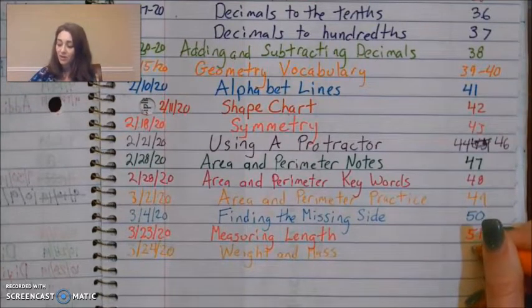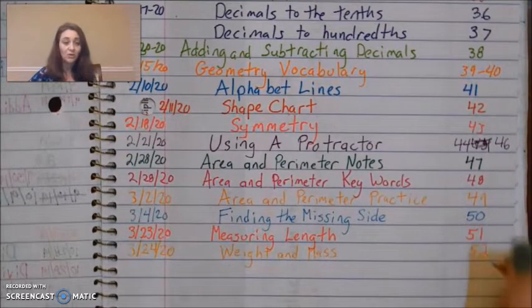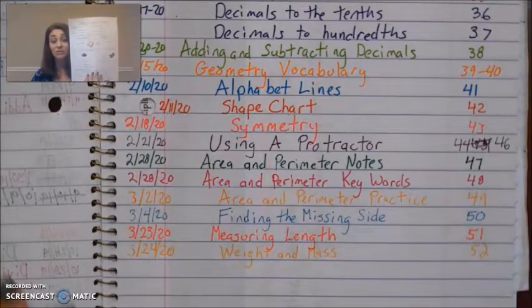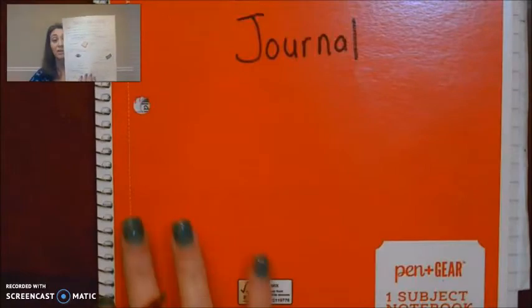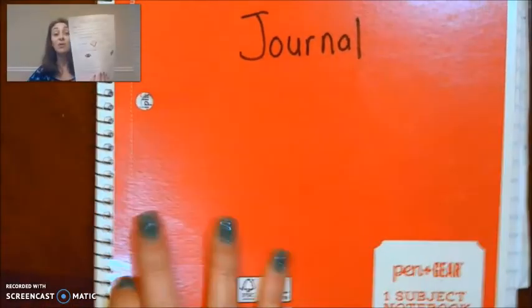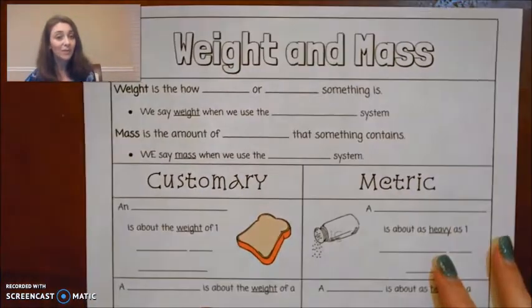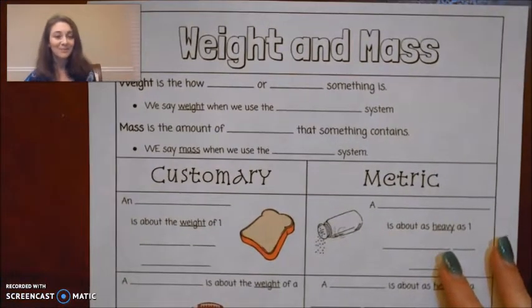If you are following along with me on your paper, go ahead and grab it now. You can close your math journal and you can just glue this in later. If you don't have this, just follow along as we go. Write it in your math journal. You won't have to worry about gluing it in later because yours will already be there.